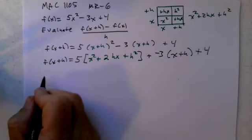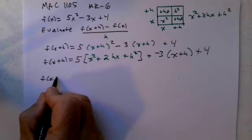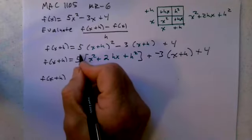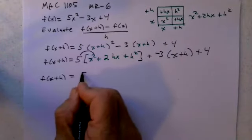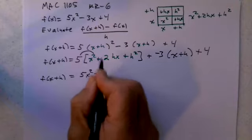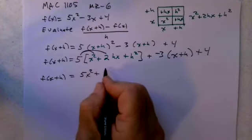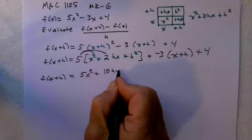The next thing I need to do is distribute. I'm still just working on f(x+h). 5 times x² is 5x². 5 times 2hx is 10hx.